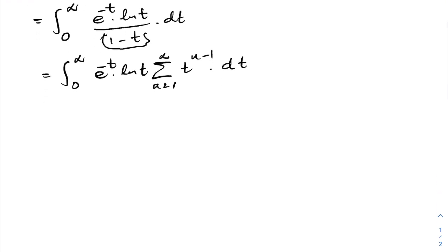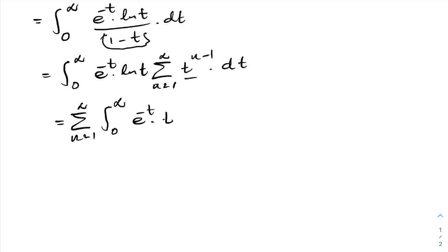We can switch the sigma notation and the integral sign, giving the sum from n = 1 to infinity of the integral from 0 to infinity of e^(-t) · t^(n-1) · ln(t) dt.